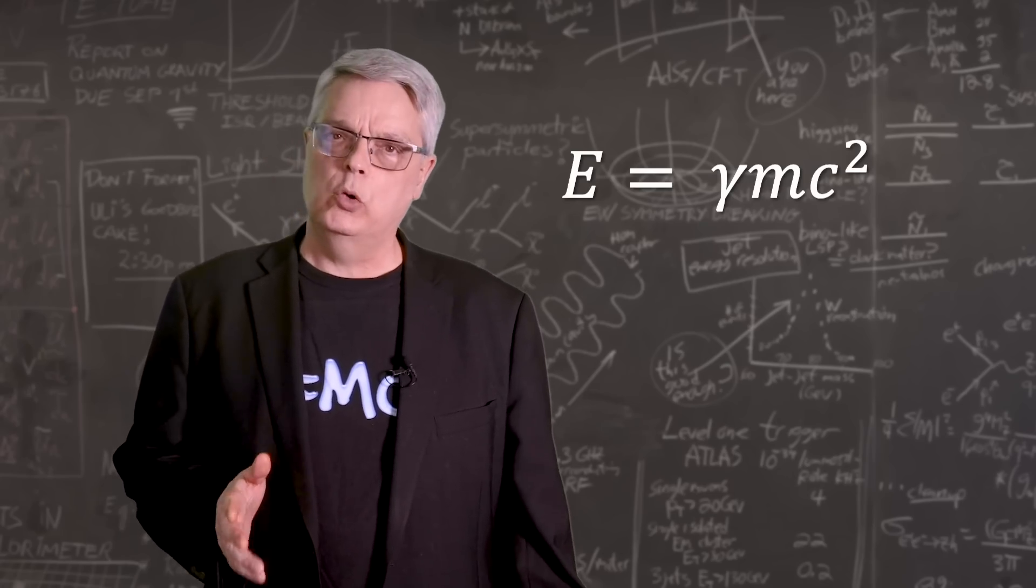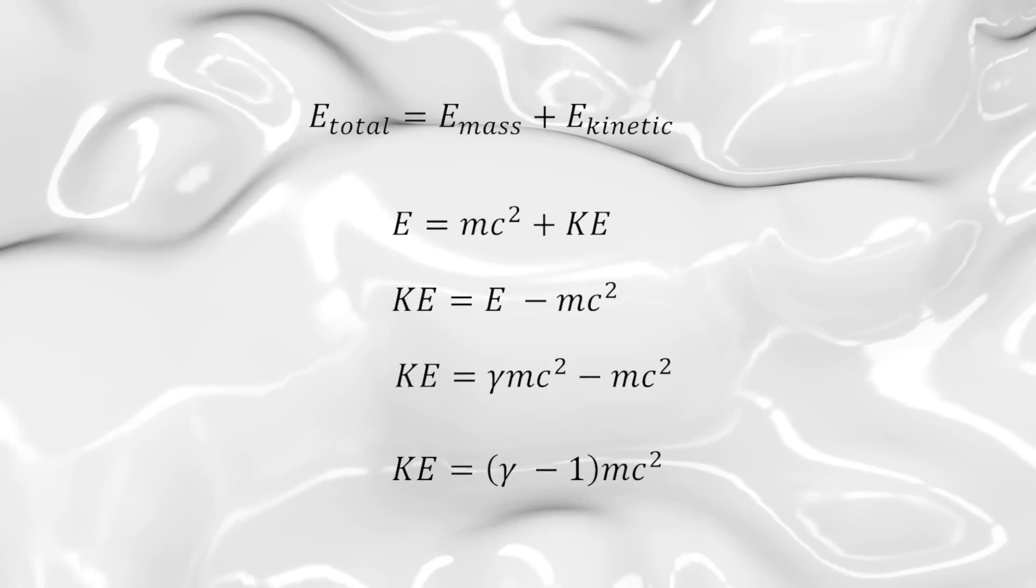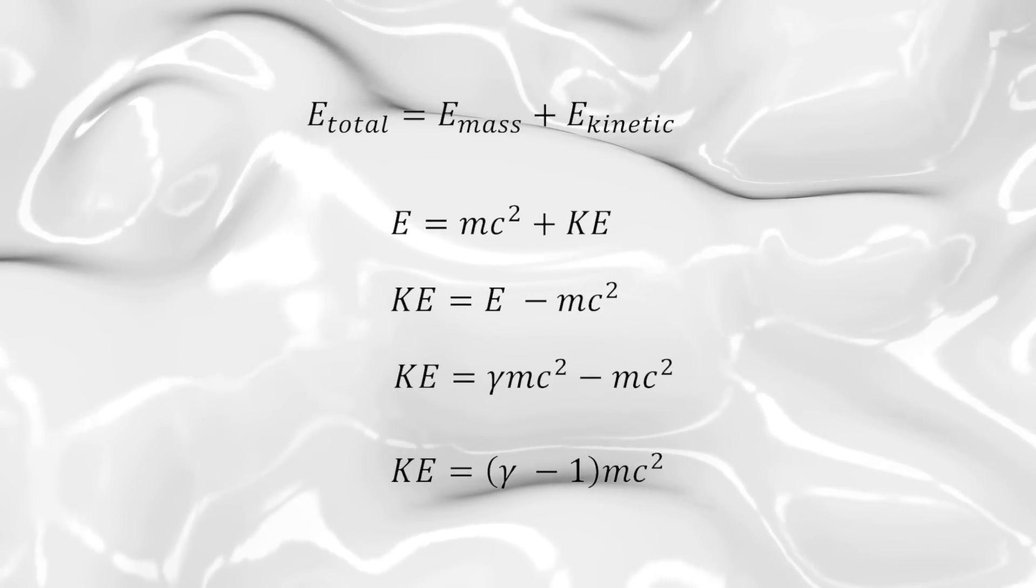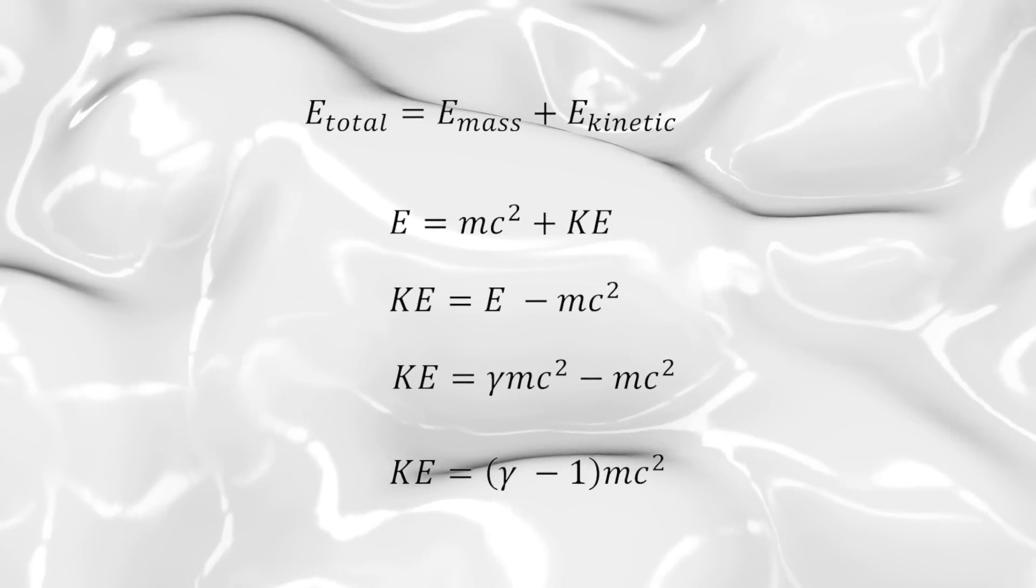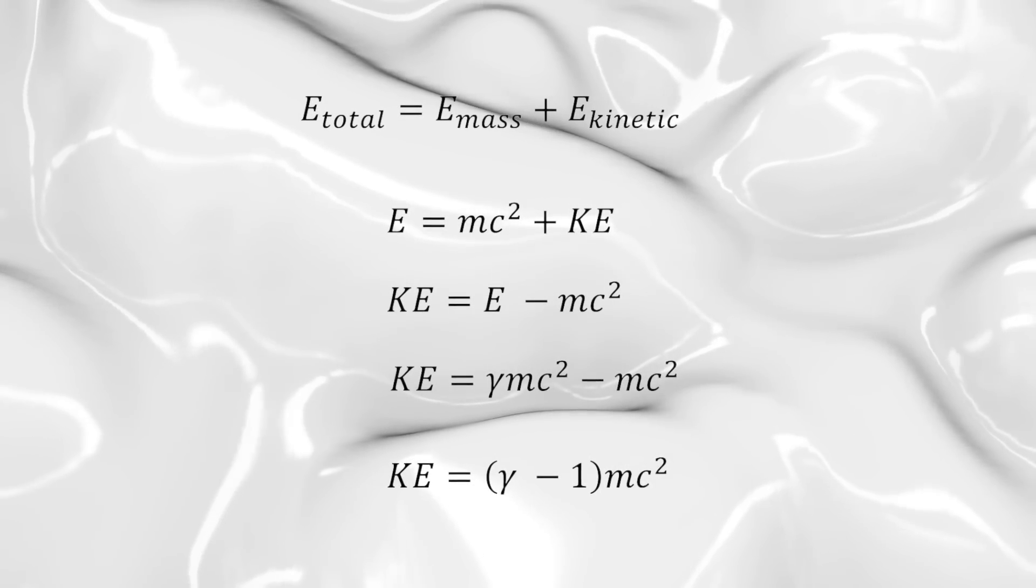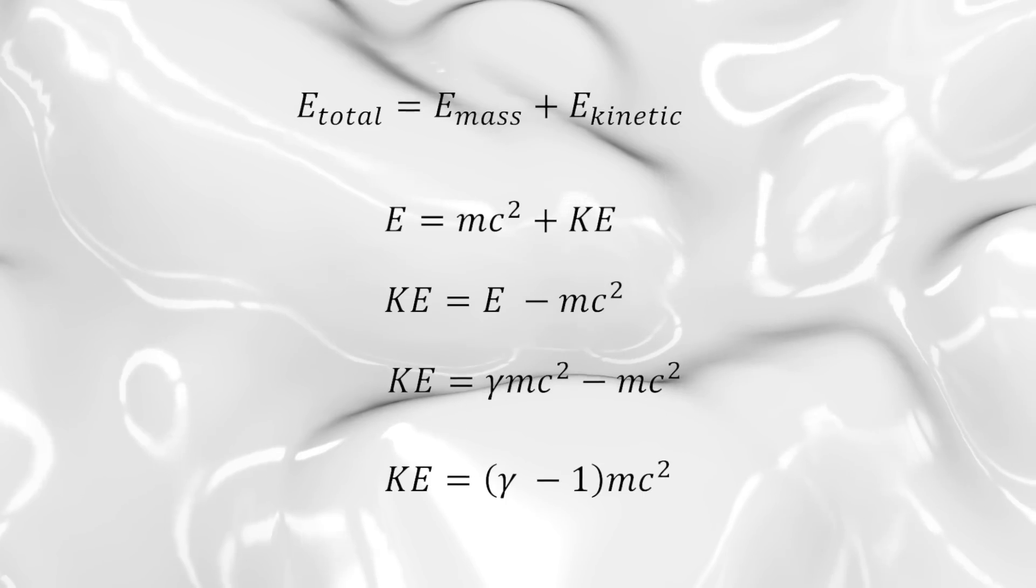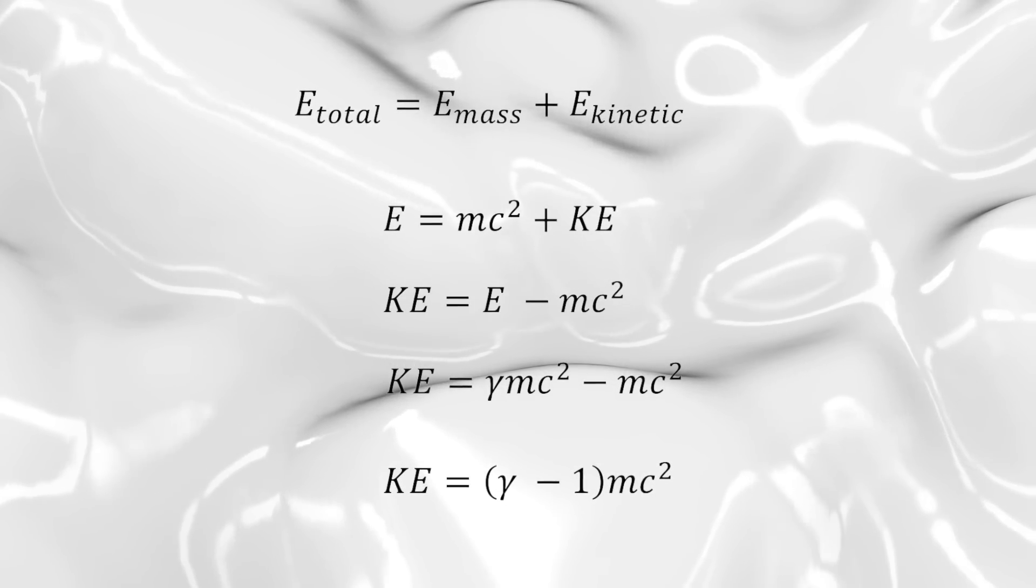Now notice that I said that this is the total energy, not the kinetic energy. The total energy of a body that isn't acting under a force is equal to the kinetic energy plus the mass energy. So we can do some simple math and we find that, at least according to Einstein, the kinetic energy of an object would be the quantity gamma minus one times mc squared.